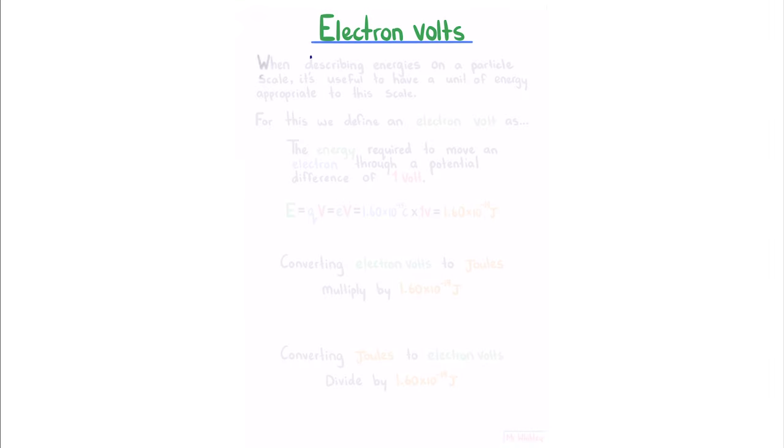Electron volts. When describing energies on a particle scale, it's useful to have a unit of energy appropriate to the scale. For this, we define an electron volt as the energy required to move an electron through a potential difference of 1 volt.